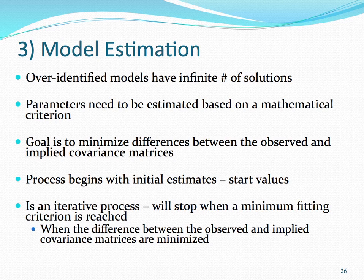Models that have more known versus unknown parameters are referred to as being over-identified. Over-identified models have an infinite number of solutions. These unknown parameters need to be estimated based on a mathematical criterion. The goal in structural equation modeling estimation methods is therefore to minimize the difference between the observed and the implied covariance matrices, where implied covariance matrices are those specified within our model.